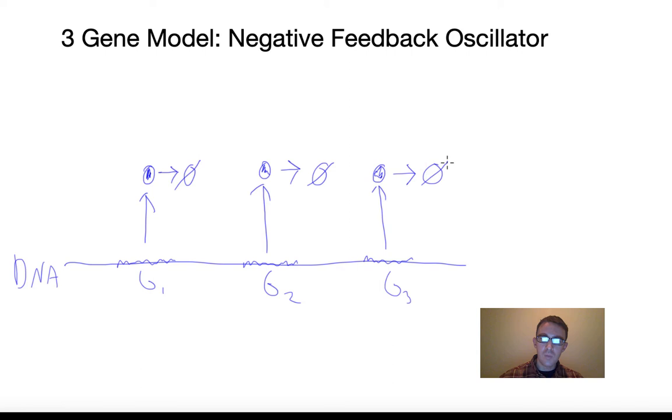Now, let's talk about the ways that these genes will interact with each other. Gene one activates gene two. That just means that gene one facilitates the transcription of gene two. It's a positive interaction. Gene two does the same for gene three. Gene two facilitates the transcription of gene three.